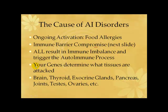So whether it's your brain, your thyroid, your exocrine glands as in Sjogren's syndrome, pancreas as in type 1 diabetes, or joints as in rheumatoid arthritis — I believe there are many autoimmune conditions not treated as autoimmune, like dizziness, peripheral neuropathy, and fibromyalgia. Even autism and anything resulting in significantly altered brain function has the potential of being an autoimmune phenomenon.